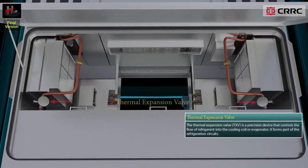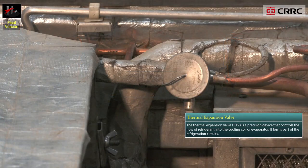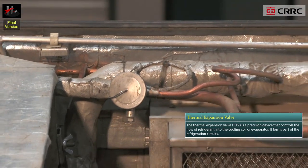The thermal expansion valve or TX valve is a precision device that controls the flow of the refrigerant into the cooling coil or the evaporator. It forms part of the refrigeration circuits.